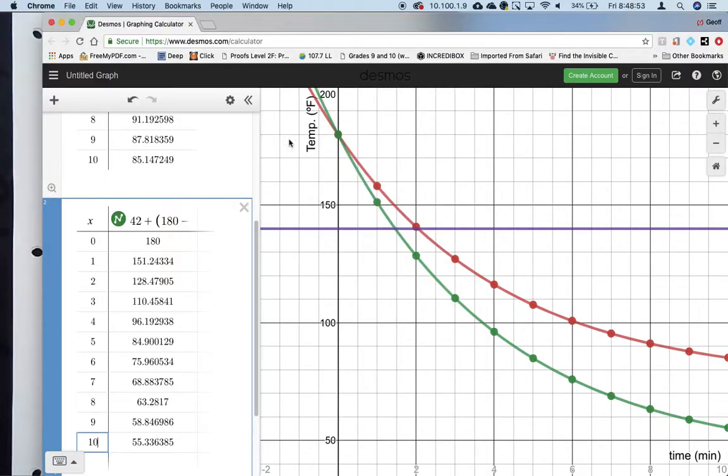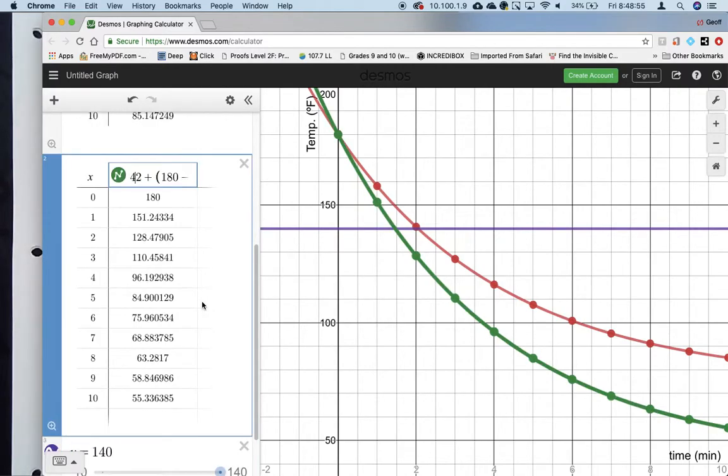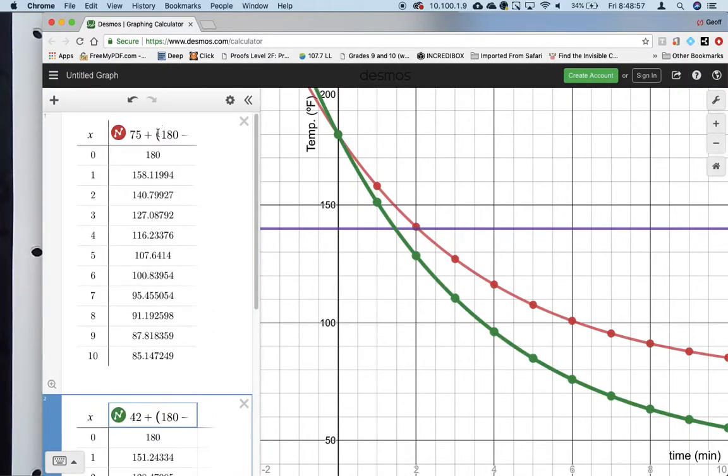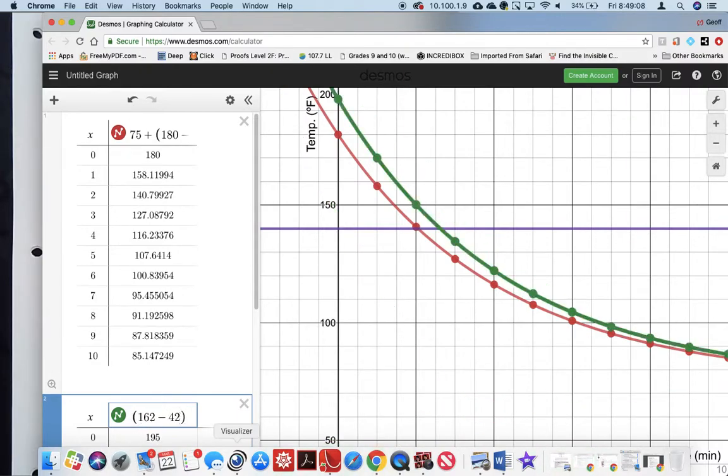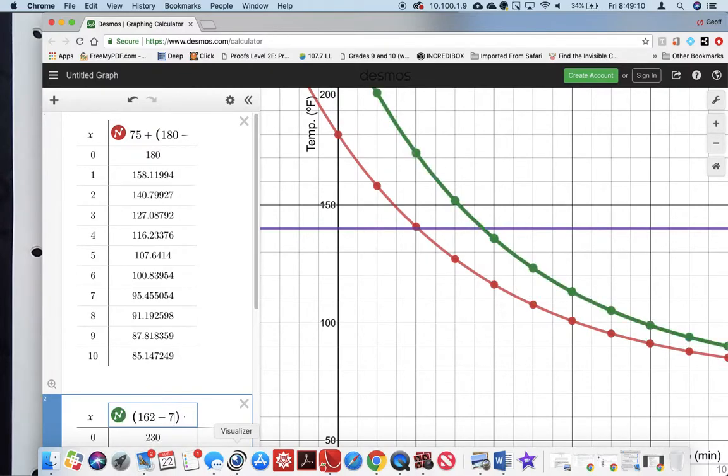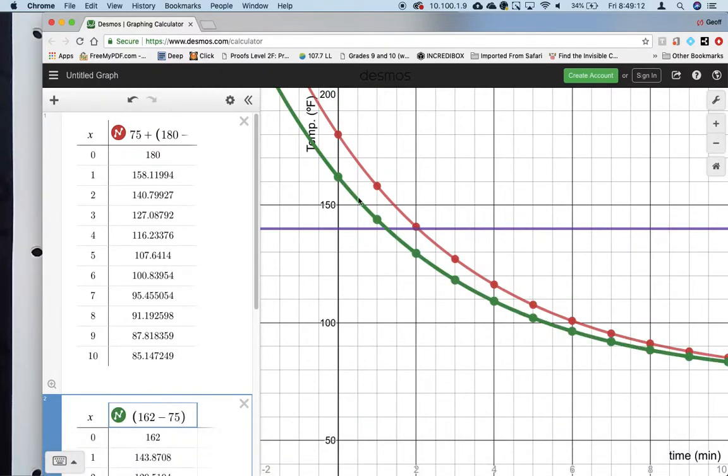I can go back to Desmos and change both equations so they show the information I want. I want the 42 degrees to become 75 degrees, the 180 to become 162 degrees, and the 42 to become 75. We have two equations - cup 2 is the green function.